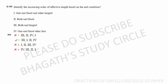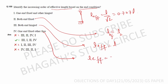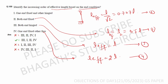Next question: identify the increasing order of effective length based on end condition. One end fixed, one end hinged: effective length = L/√2 = 0.707L. Both fixed: effective length = L/2 = 0.5L. Both hinged: effective length = L. One end fixed, one end free: effective length = 2L. So in increasing order: both fixed, then fixed-hinged, then both hinged, then fixed-free. Answer: two, one, three, four.